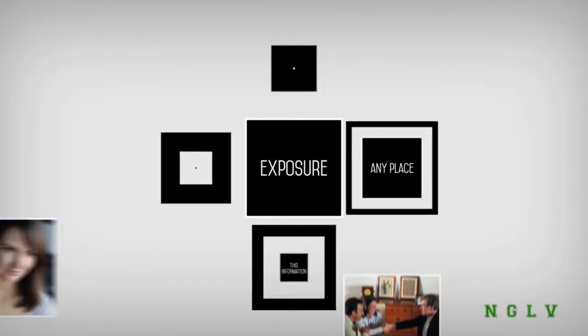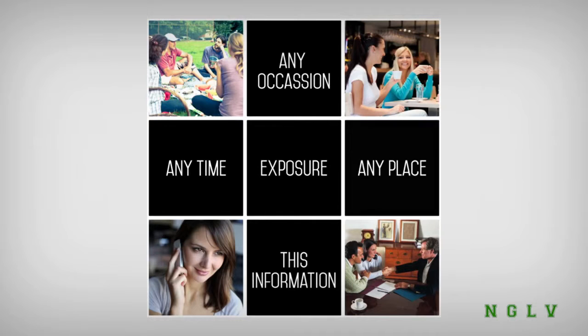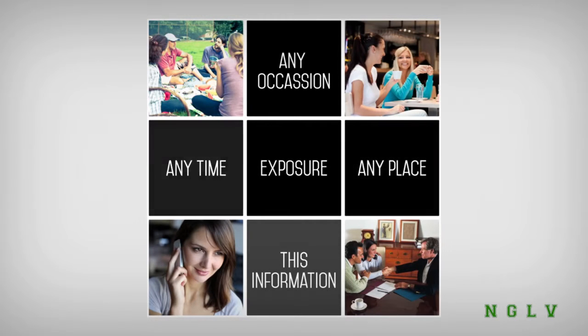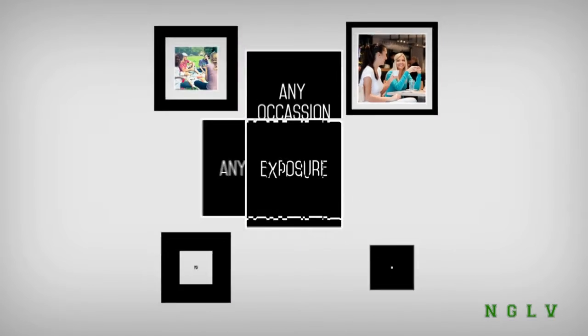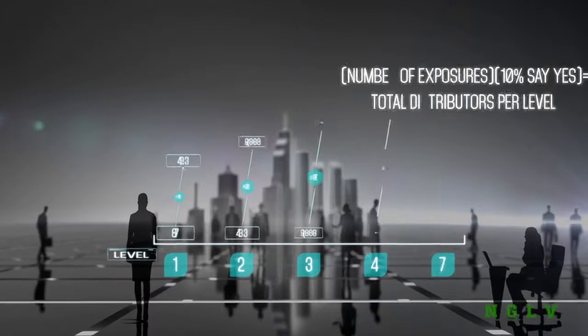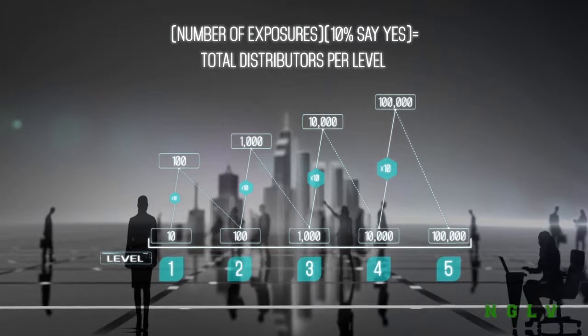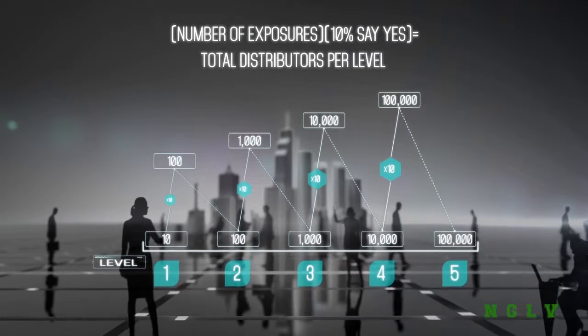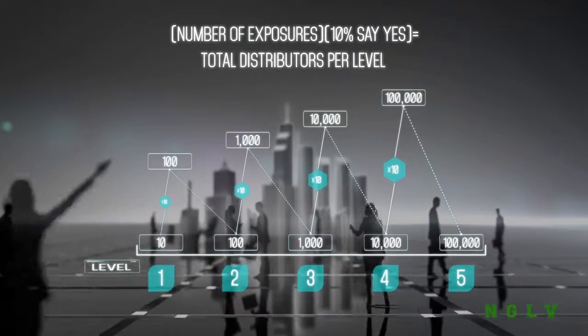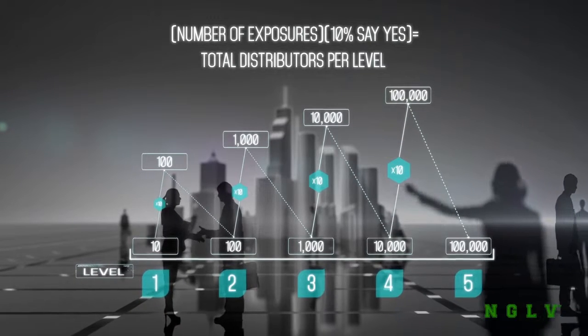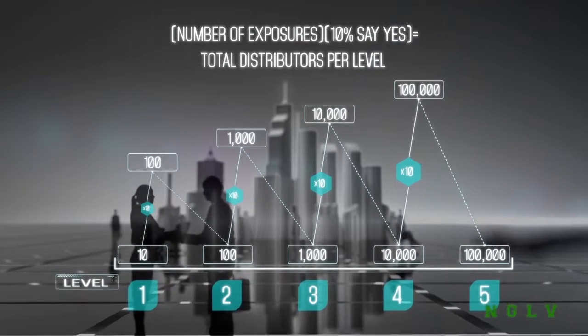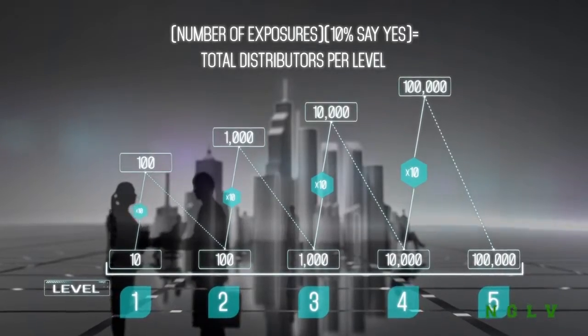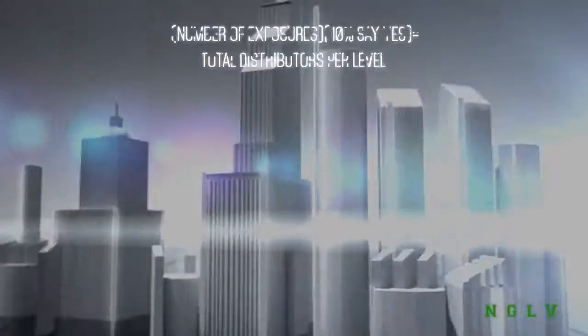An exposure is anytime someone is shown this information. It can be at a coffee shop, a home meeting, a three-way call, etc. You create 100 exposures and 10% say yes. That's 10 distributors on your first level. Those 10 distributors each create 100 exposures, totaling 1,000 exposures, and 10% say yes. That's 100 distributors on your second level.